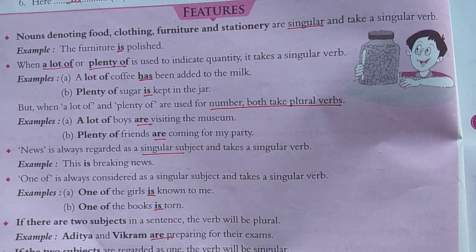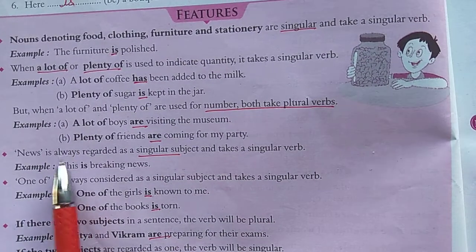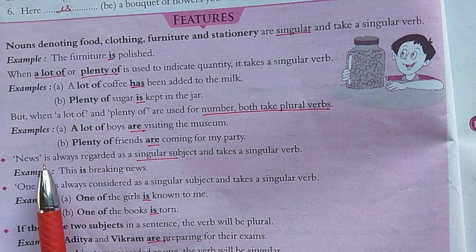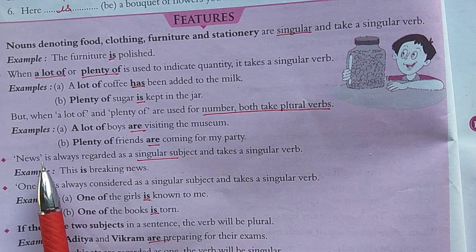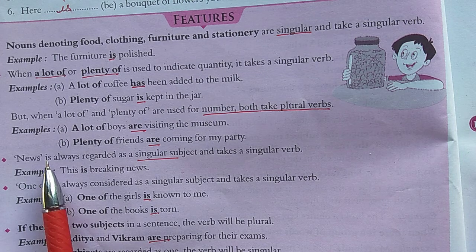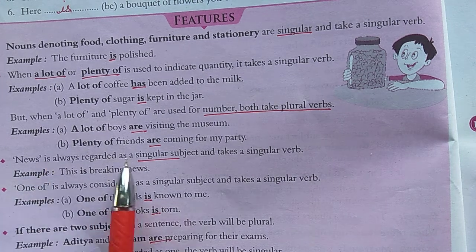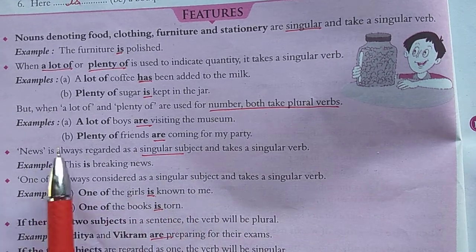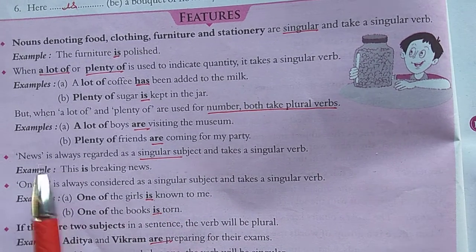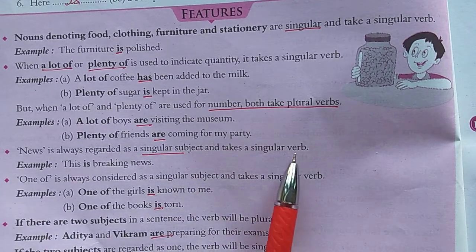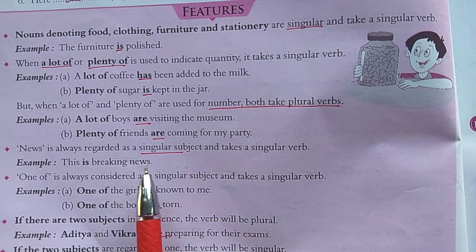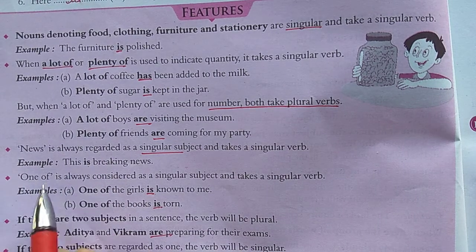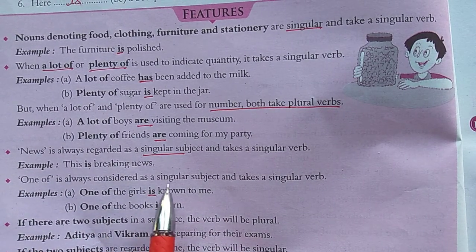Regarding the word 'news' — do not get confused by the letter 's' at the end. 'News' is always a singular term referring to information. It is always regarded as a singular subject and takes a singular verb. For example, 'This is breaking news' — 'is' is the singular verb here.